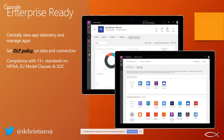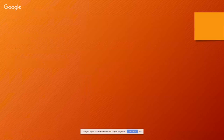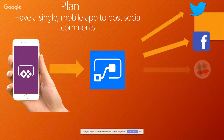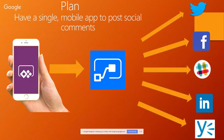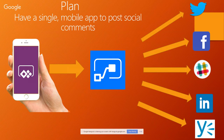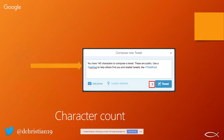The first demo is about having a single mobile app to post social comments to all platforms: Twitter, Facebook, Yammer, Instagram, and now LinkedIn. This is something I've been using myself. I also built in a character count feature — before Twitter had only 140 characters, but now it's bumped up to 280. I wanted to add that 280-character counter that counts down, so that's what I'm going to demo.